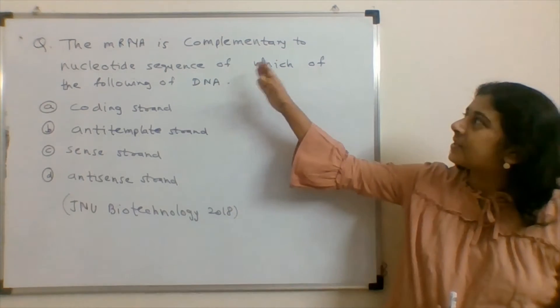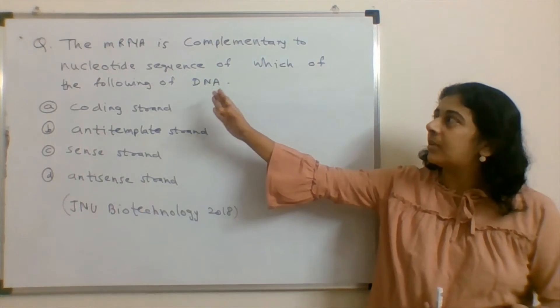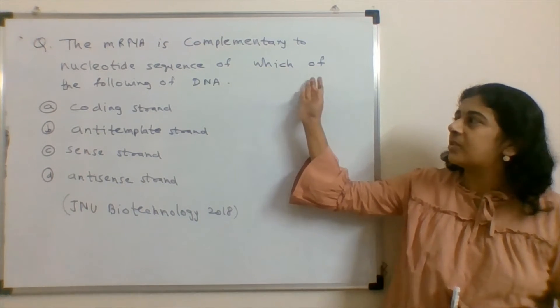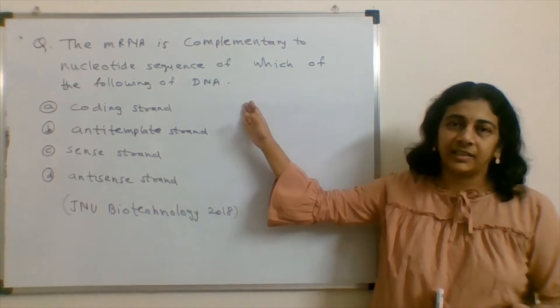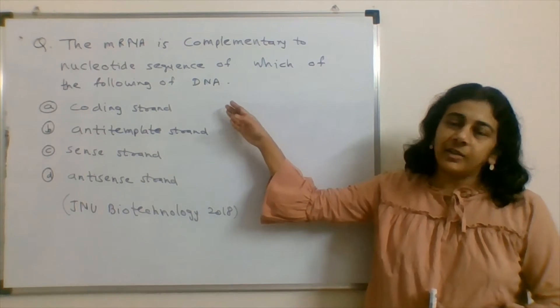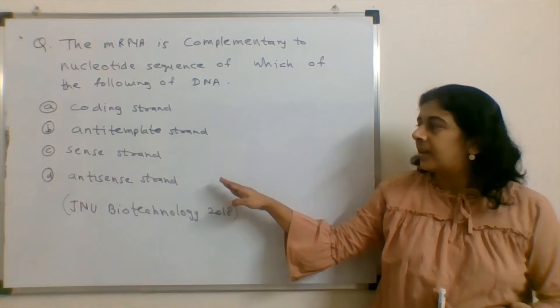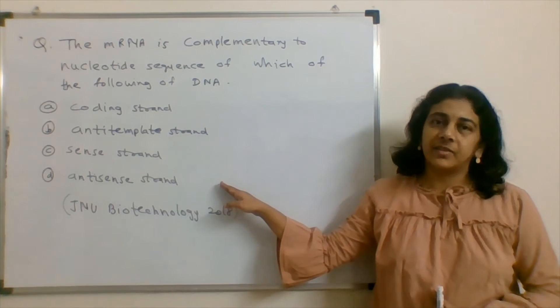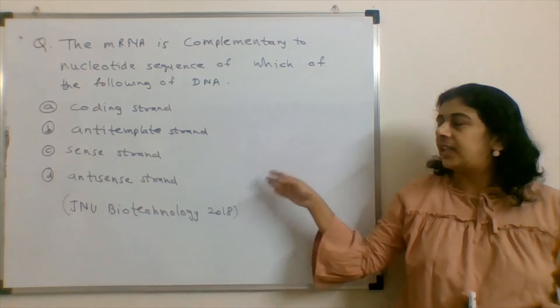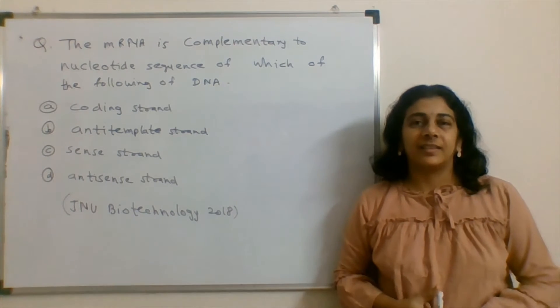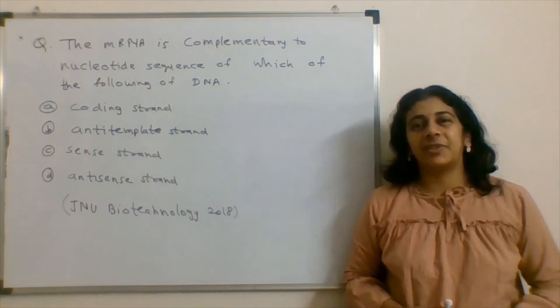The mRNA is complementary to nucleotide sequence of which of the following of DNA. Options are coding strand, anti-template strand, sense strand, and antisense strand. So out of these one option is correct. Let's find the answer for the question.